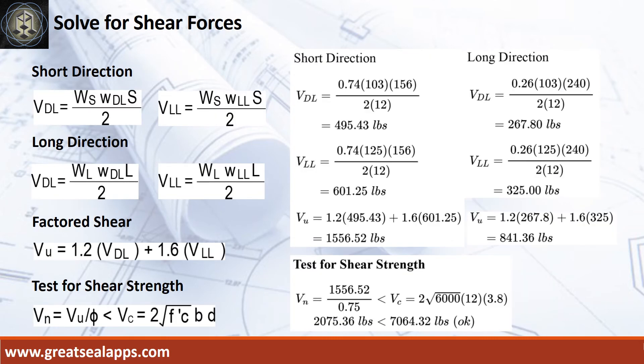At short direction, shear force from dead load is 495.43 pounds and live load is 601.25 pounds, for a maximum shear force of 1,556.52 pounds. At long direction, shear force from dead load is 267.8 pounds and live load is 325 pounds, for a maximum shear force of 841.36 pounds. The nominal shear force is 2,075.36 pounds, which is less than 7,064.32 pounds — shear is adequate.